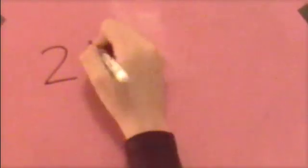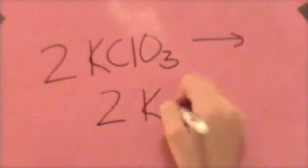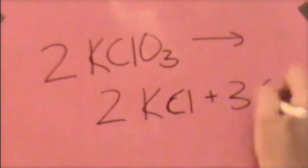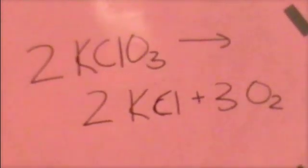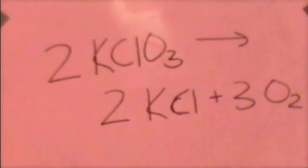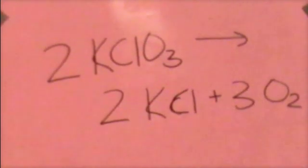Let's look at the problem we've seen before. 2 KClO3 yields 2 KCl plus 3 O2. Now, we already looked at this problem from a mole ratio, but what do we do if they ask us how many grams of potassium chloride are produced if 25 grams of potassium chlorate decompose?